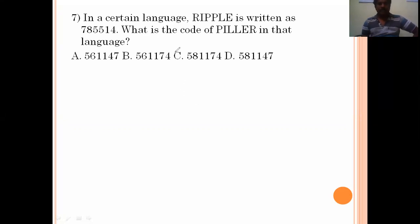In a certain language, RIPPLE is written as 78, 55, 14. What is the code for LEARN in that language? R is coded as 7, I is coded as 8, P is coded as 5, L is coded as 1, E is coded as 4. So LEARN is coded as 5, 8, double 1, 14. Option A is the right answer.